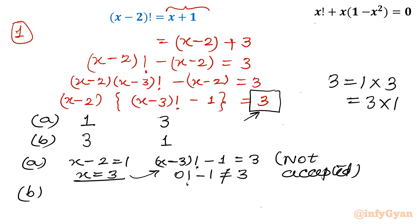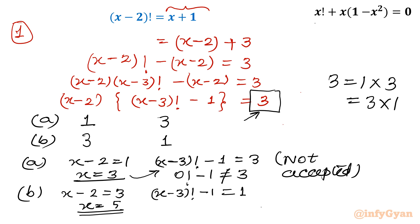Now case B: x minus 2 equal to 3, so x will be equal to 5. We need to verify the curly bracket: (x minus 3) factorial minus 1 should equal 1. Putting x equal to 5: (5 minus 3) factorial minus 1 equals 2 factorial minus 1 equals 2 minus 1 equals 1. Yes, that is correct — this value is verified. So the conclusion is x equal to 5 is our true solution.